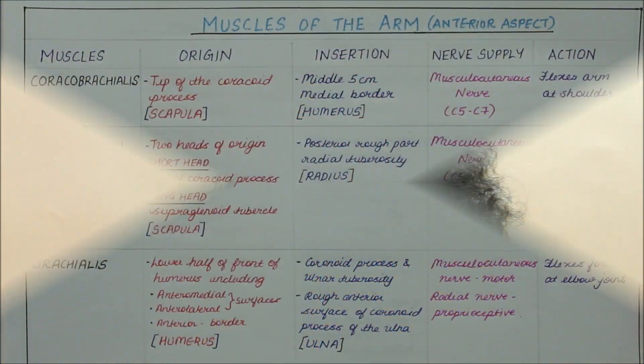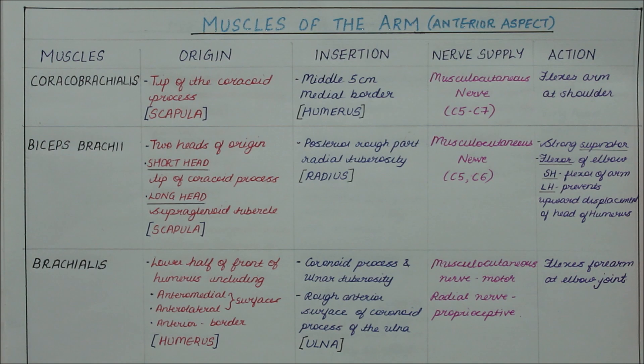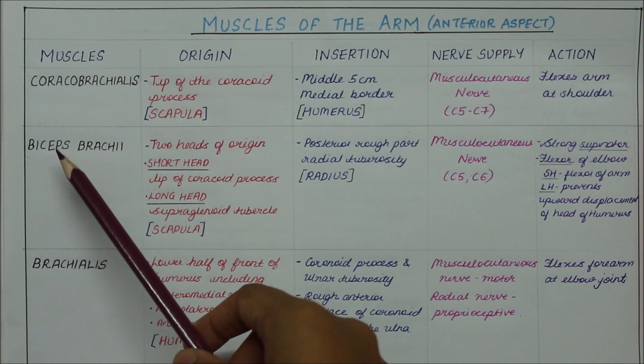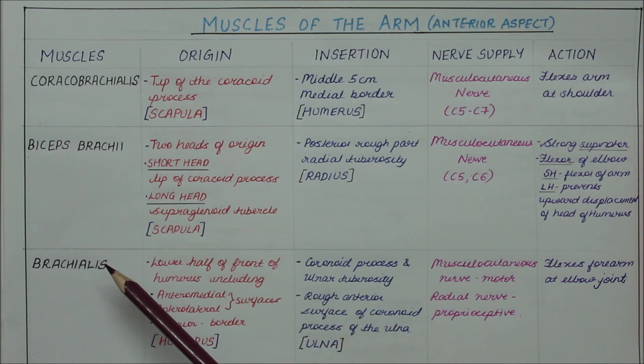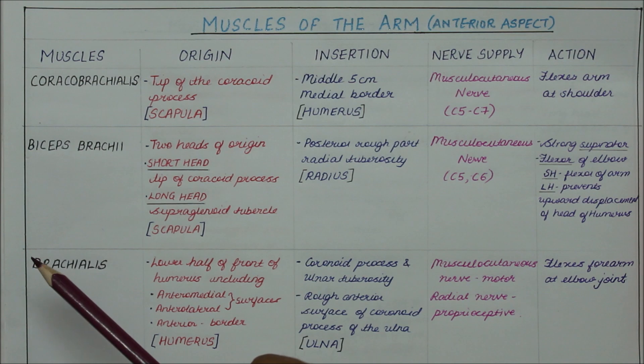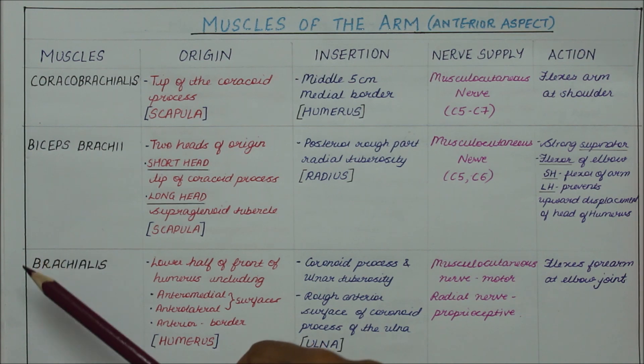Hello friends and welcome to my channel. Today we will be learning about the origin, insertion, nerve supply and action of the muscles of the body. Now let's look at the muscles of the arm on the anterior aspect. We have the coracobrachialis, the biceps brachii and the brachialis muscle. To remember this we can use the word BBC.